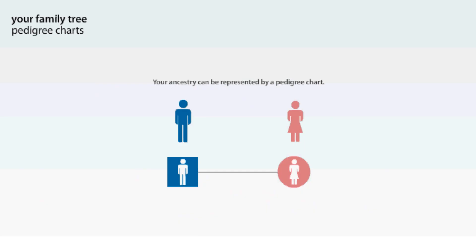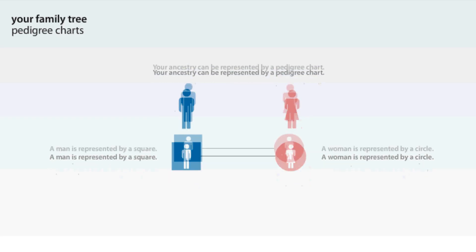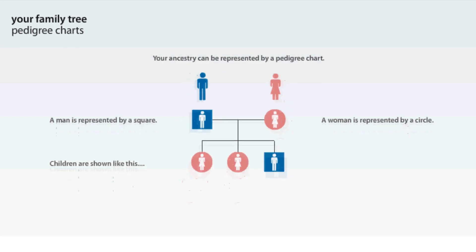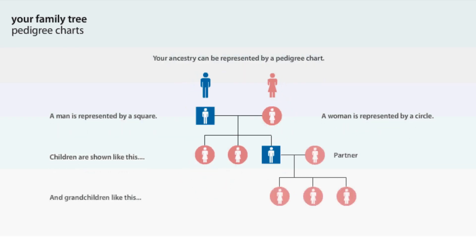Your ancestry can be represented by a pedigree chart. A man is represented by a square, and a woman by a circle. Children are shown like this, and grandchildren like this.